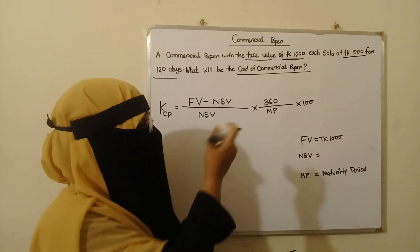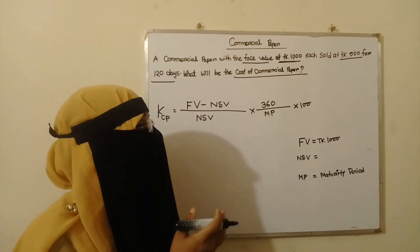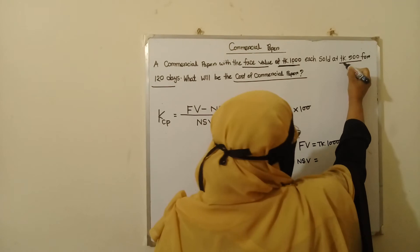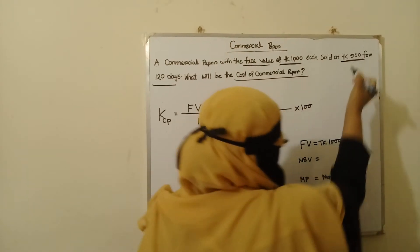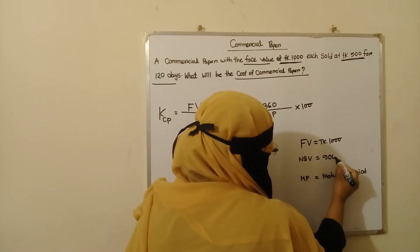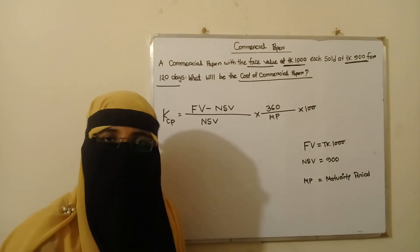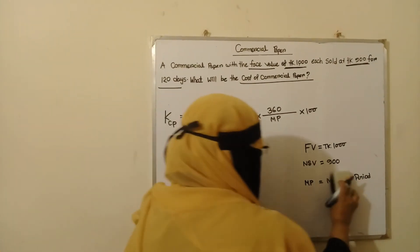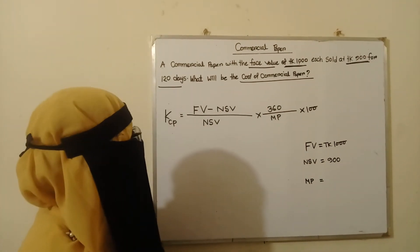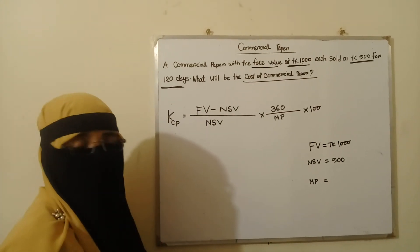If we have the same question as shown here, we will work through this example. The commercial paper has a maturity period of 120 days.